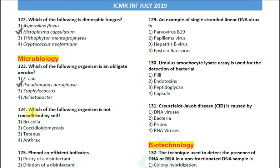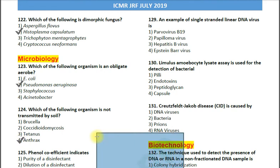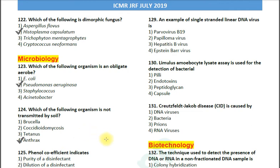Question number 124: Which of the following organisms is not transmitted by soil? Options: 1. Brucella; 2. Coccidiomycosis; 3. Tetanus; 4. Anthrax. The correct answer is option 4 — Anthrax. All the others are transmitted by soil, but Anthrax is transmitted from animal to human or from human to human.